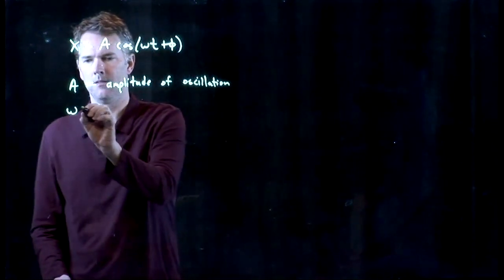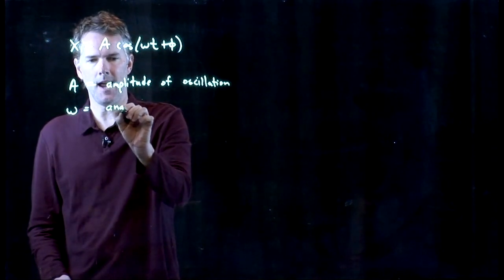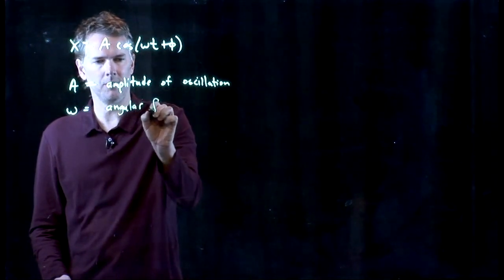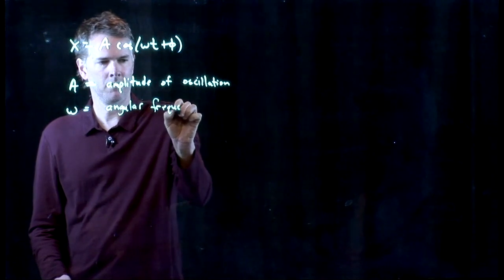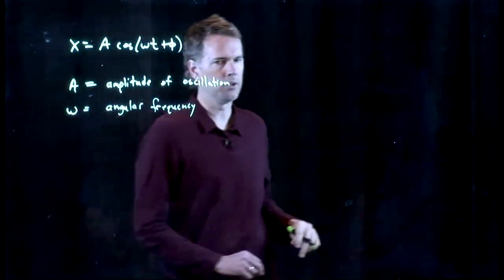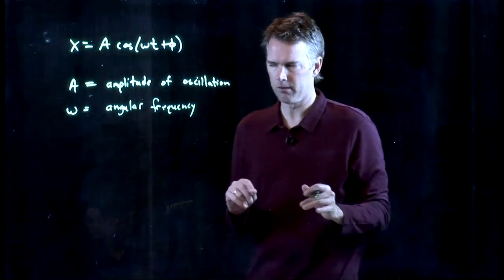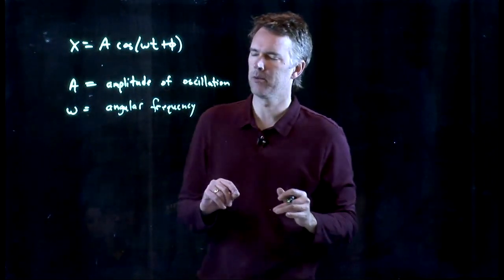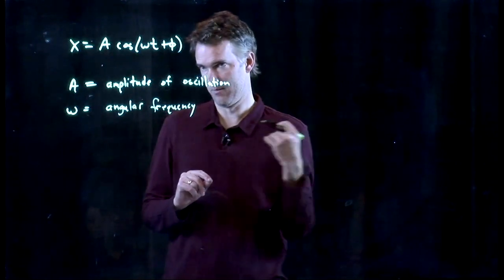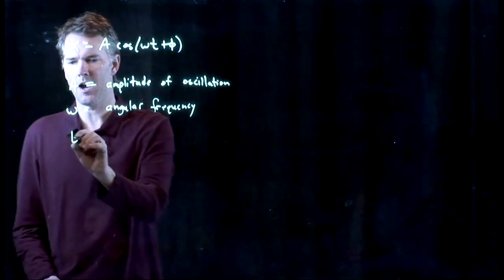Omega is our angular frequency. That's going to have units of radians per second, but remember radians is really unitless. Angular frequency is just how fast that thing's going back and forth. T is of course time.